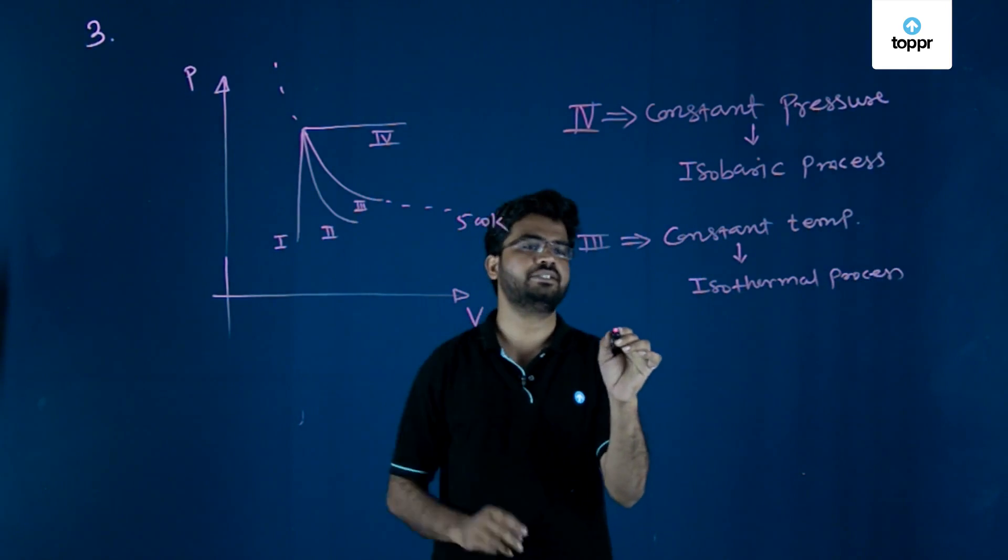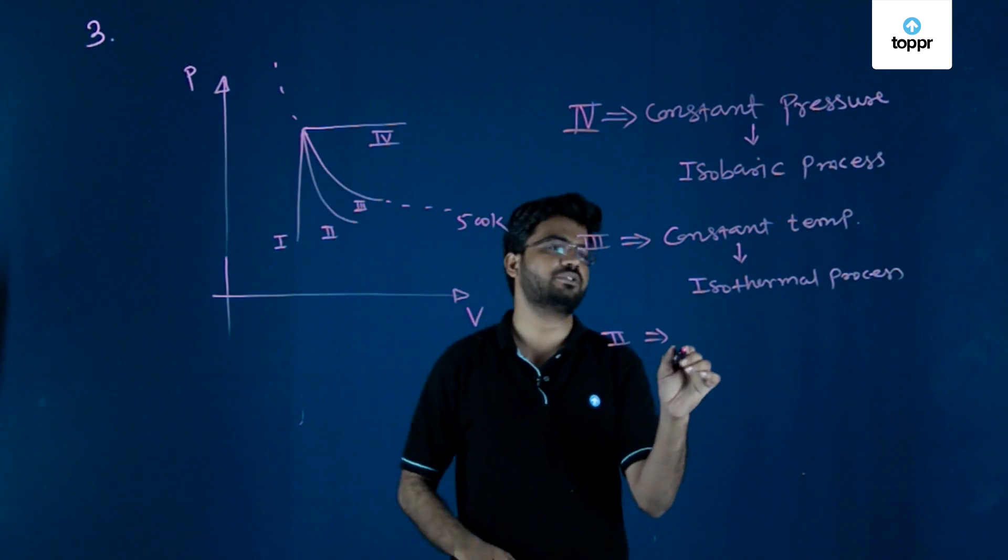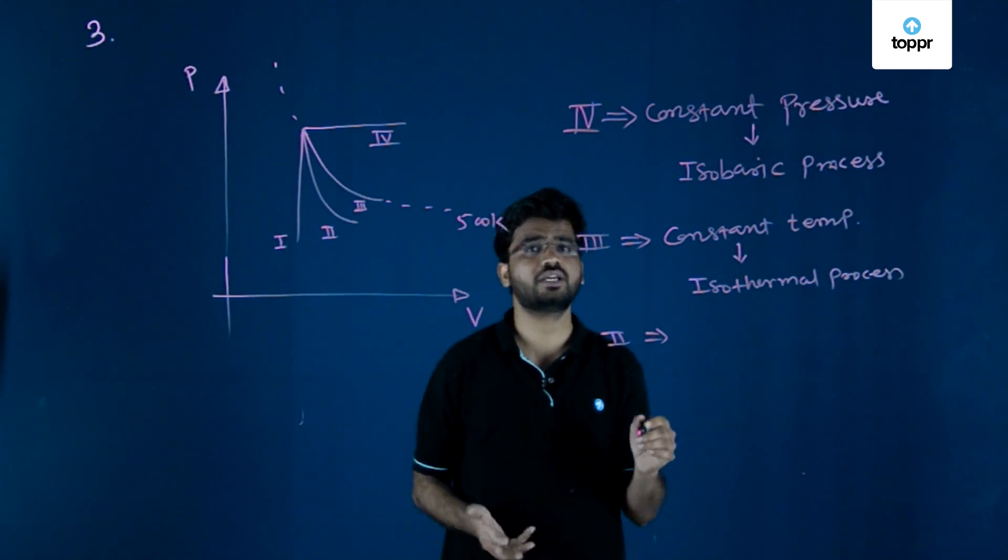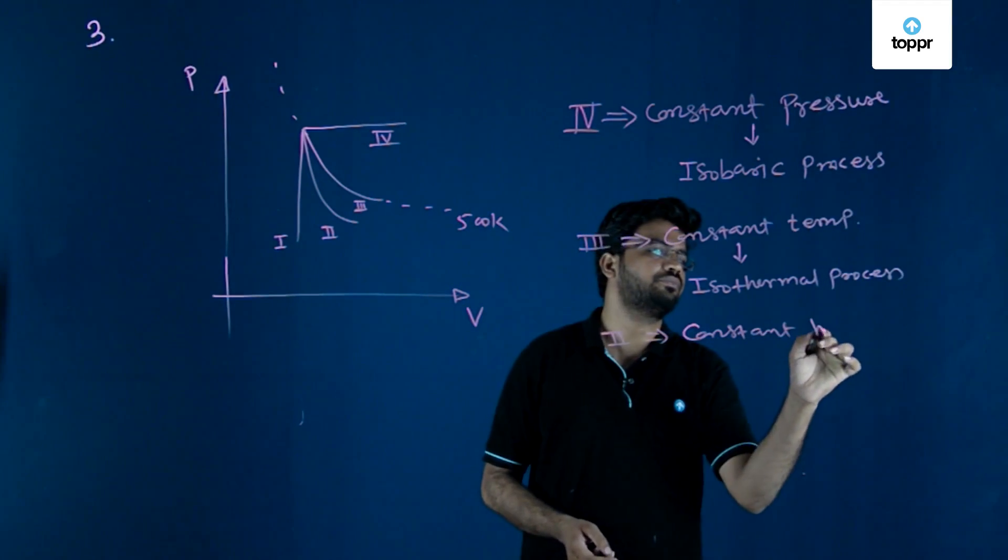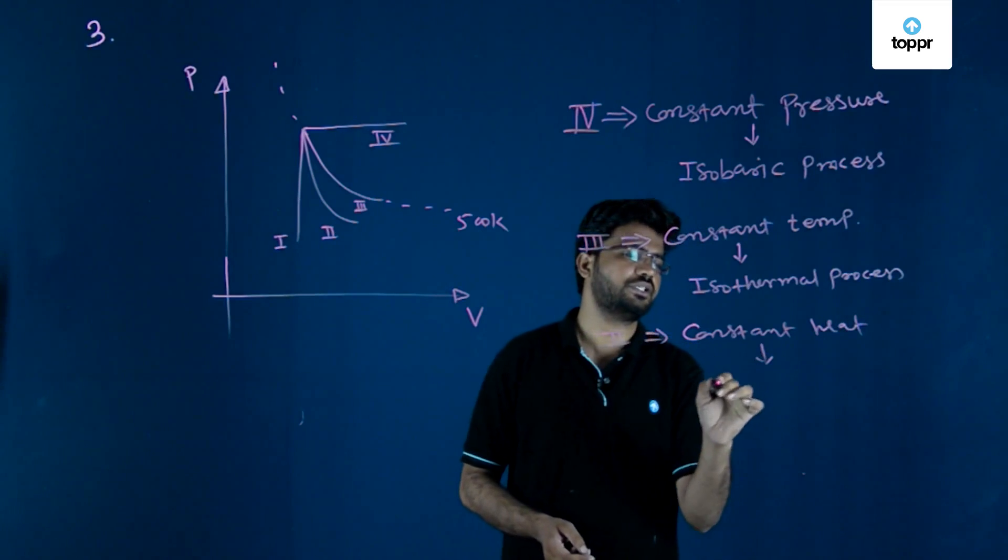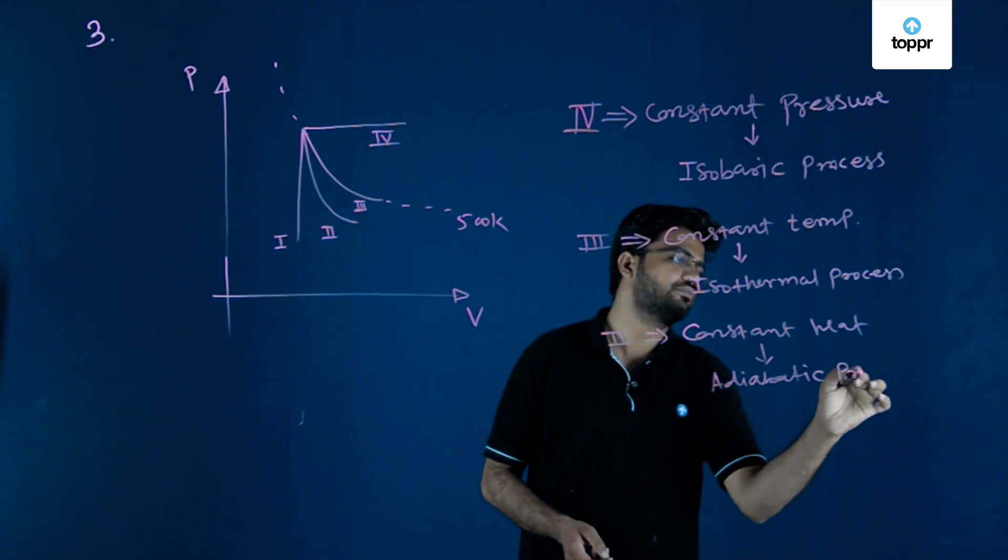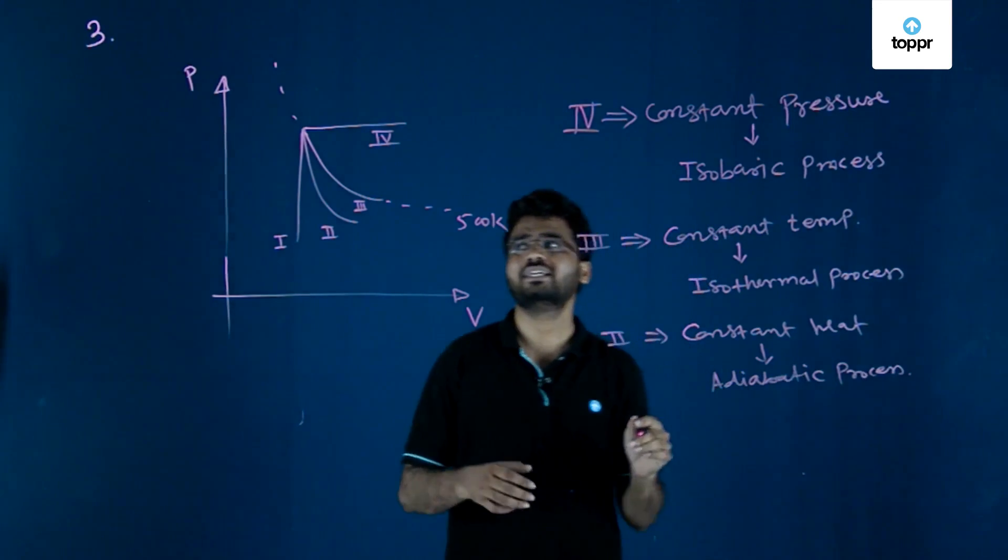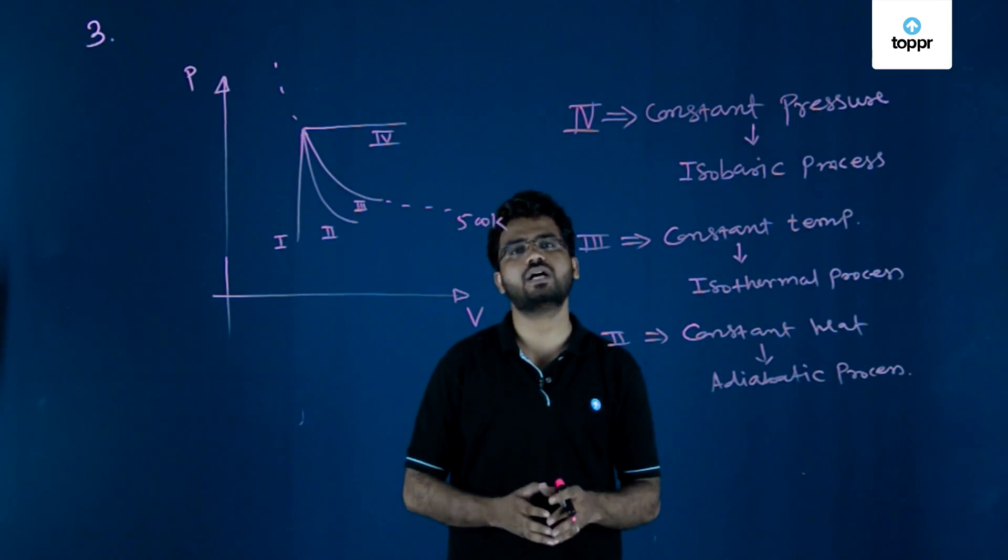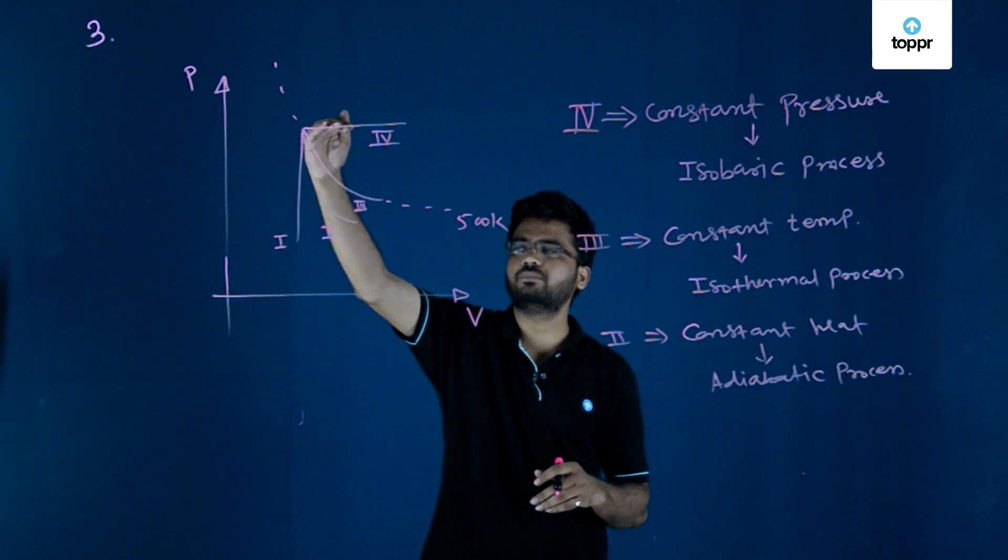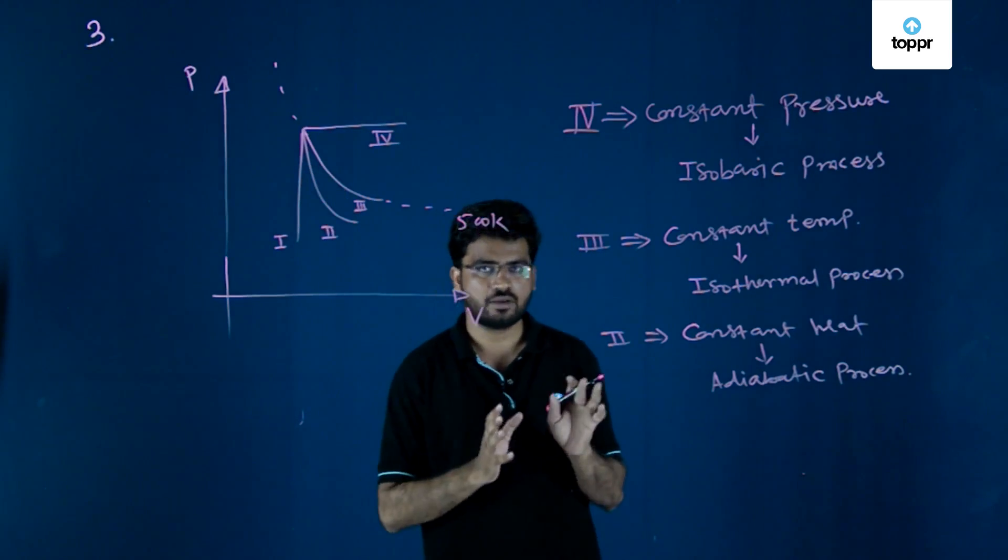Then we have the second process, which is the adiabatic process. It is carried out with constant heat. You can identify it by using PV to the power gamma equals constant, or noting that the adiabatic process has a steeper slope than the isothermal process.